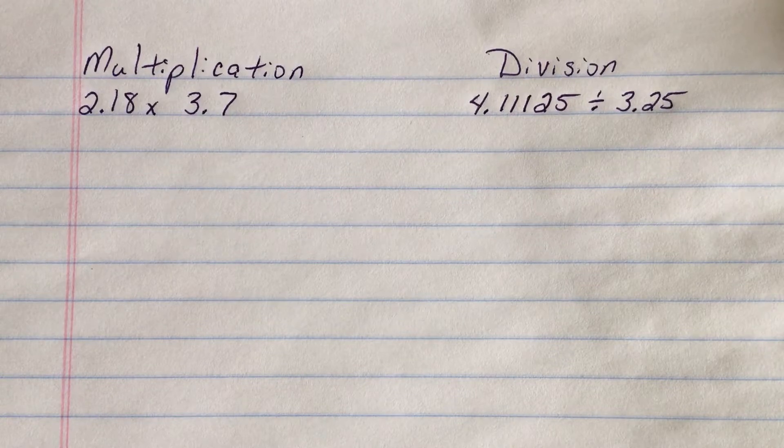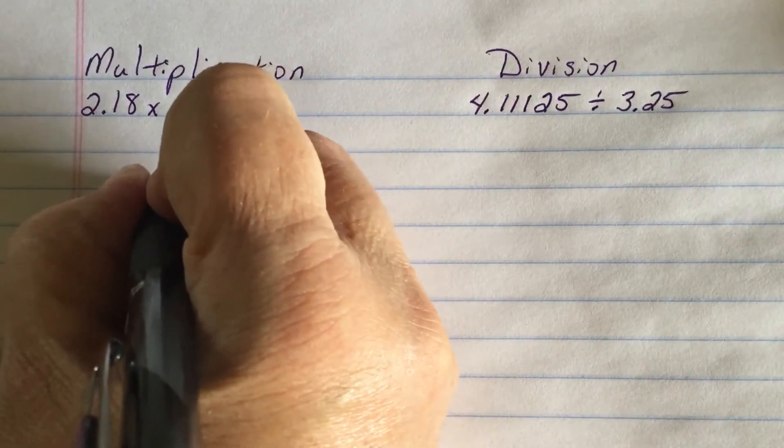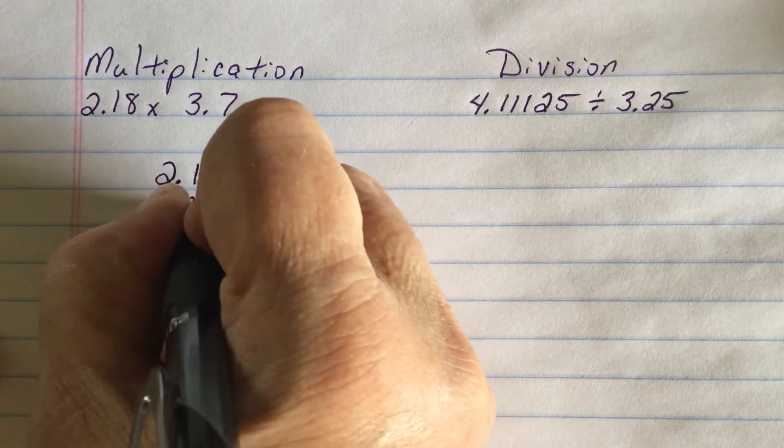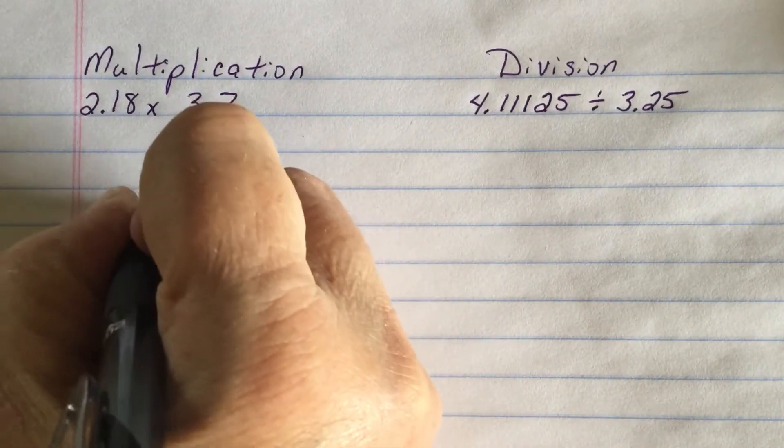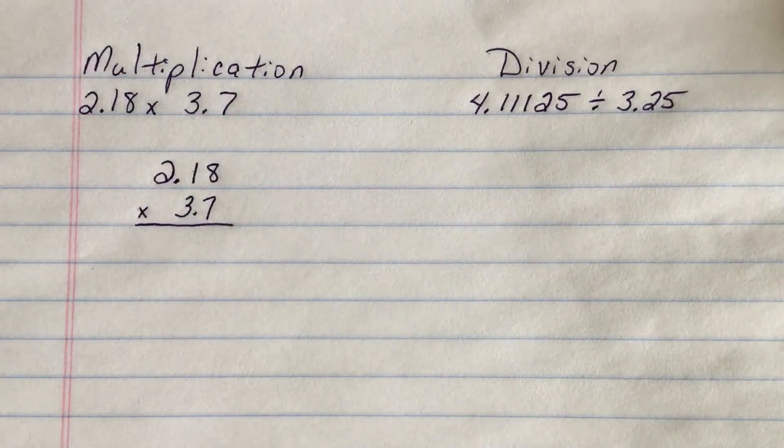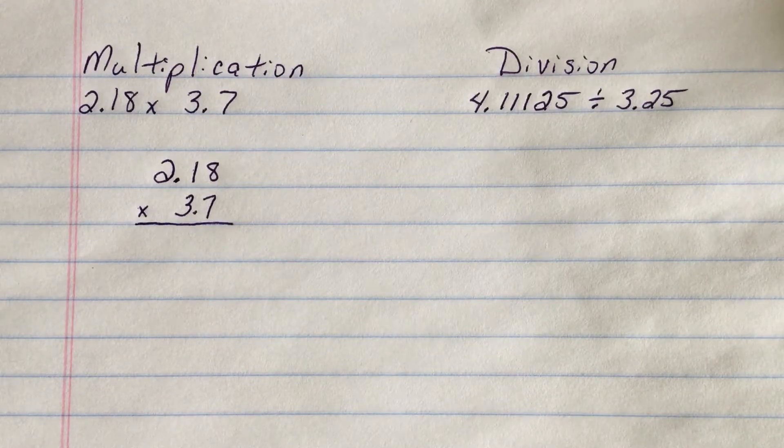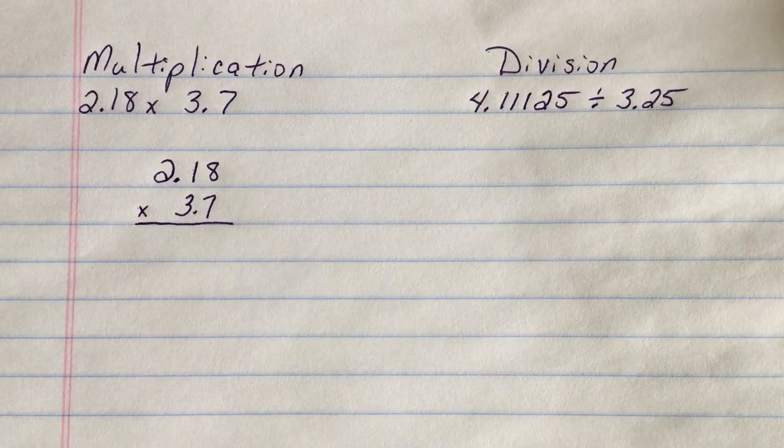Now unlike adding and subtracting, when I go to do this one and set it up vertically, I do line up off of the right and I actually ignore the decimals for now. Here's where multiplication differs from adding and subtracting, and division is going to be a little different yet. But I ignore the decimals and I'm going to actually handle this as if I'm multiplying 218 times 37.